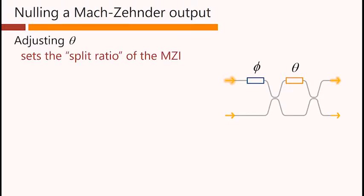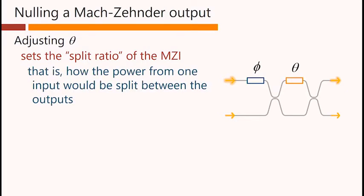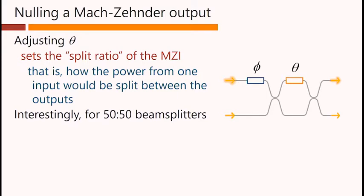Adjusting theta sets the split ratio of the Mach-Zehnder. Interestingly, for 50-50 beam splitters, adjusting theta does not change the relative phase with which the two inputs mix at an output. That is controlled only by phi.